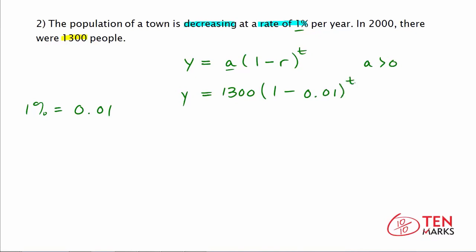This is the exponential decay function that models the population decrease in this town. If you were given a number of years, you could find how low the population has gone in that time.